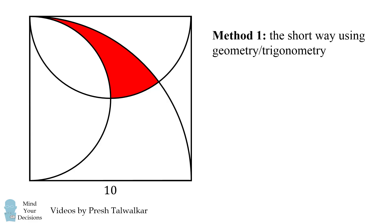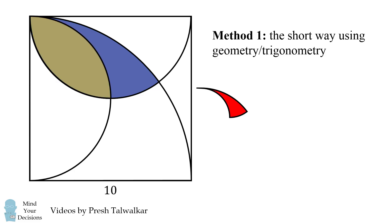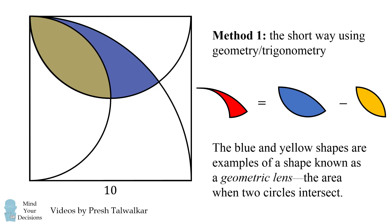In order to solve for this area, we'll solve it by finding the areas of two shapes that will be easier to solve for. We'll solve for this red area as the area of this blue shape minus the area of this yellow shape. The blue and yellow shapes are examples of a shape known as a geometric lens — that's the area when two circles intersect. So since we need to know the area of a geometric lens, let's derive it generally.